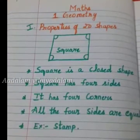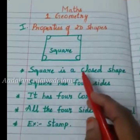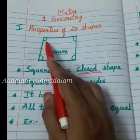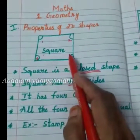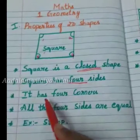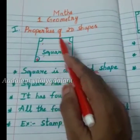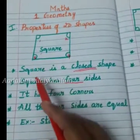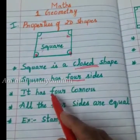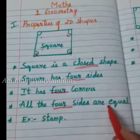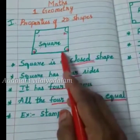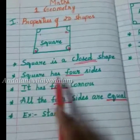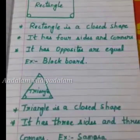This is a square. A square is called a closed shape. A square has four sides — one, two, three, four — and it has four corners — one, two, three, four. All four sides of a square are equal; no side is longer or shorter. All sides are of equal size, equal centimeters. An example is a stamp.